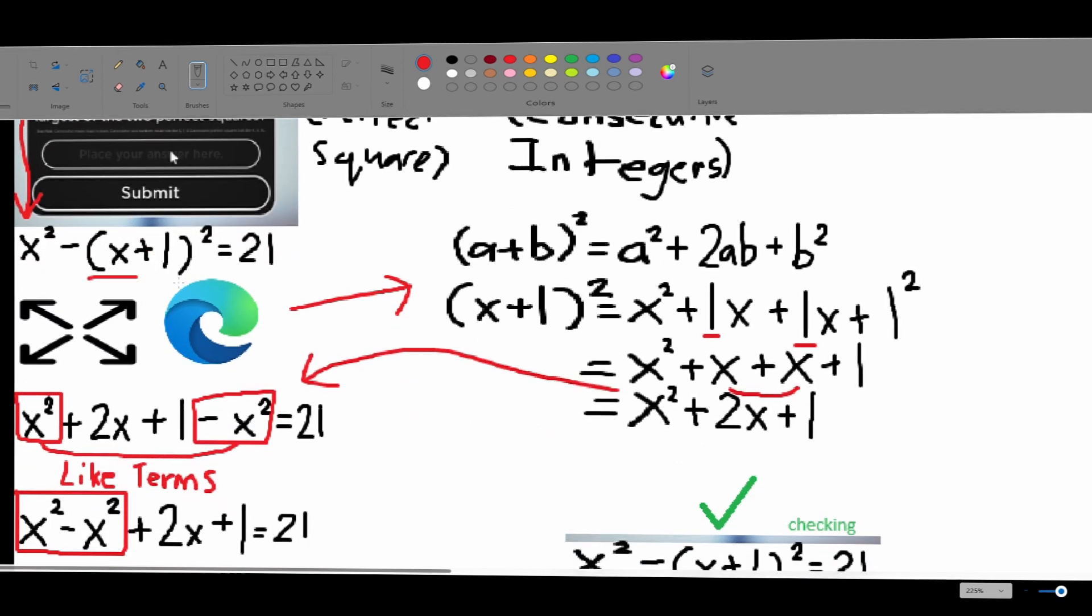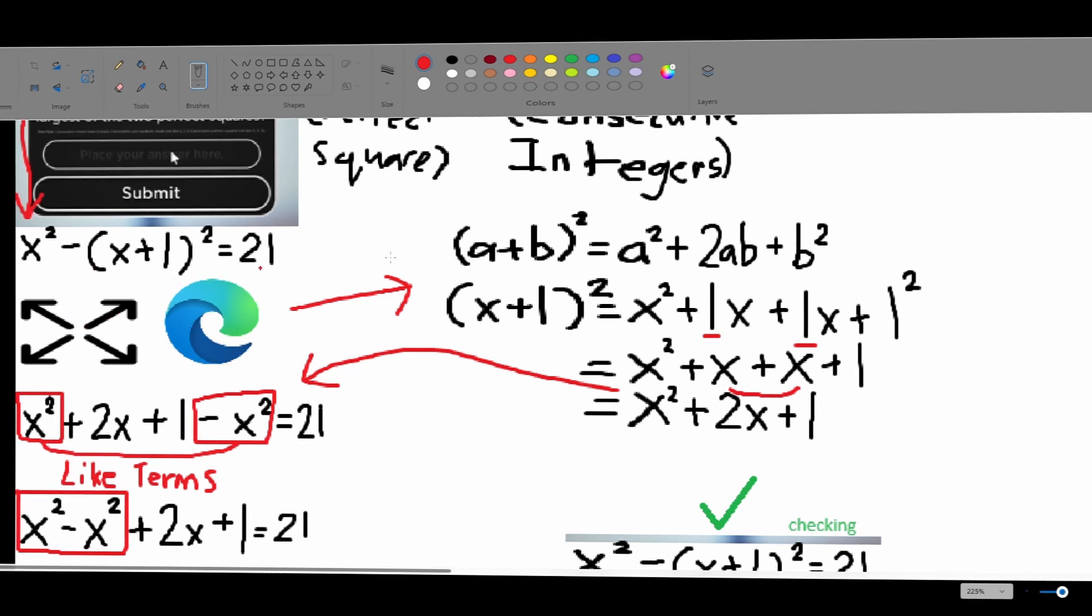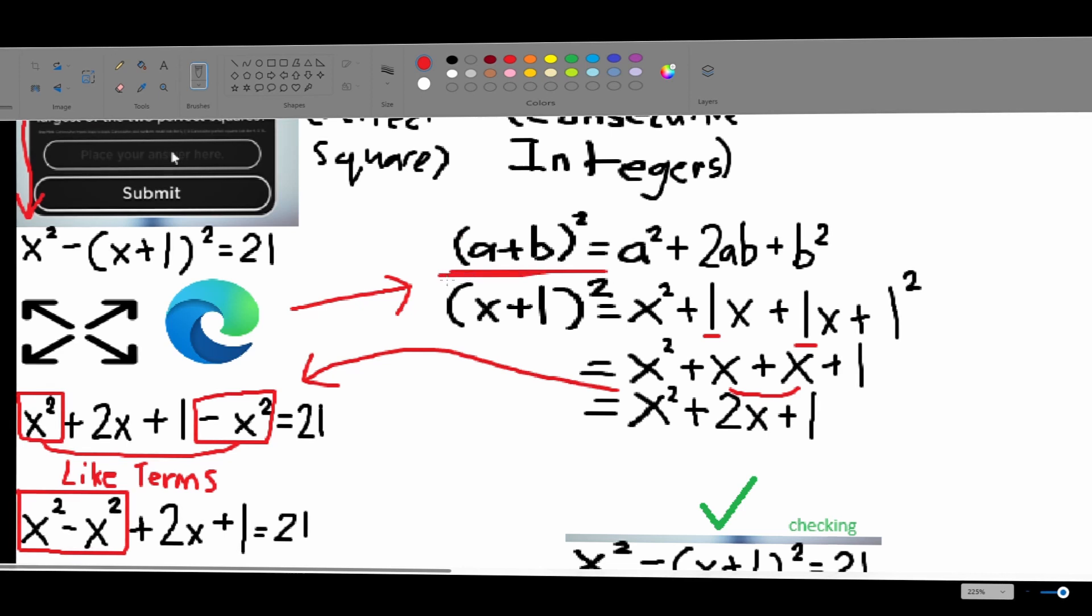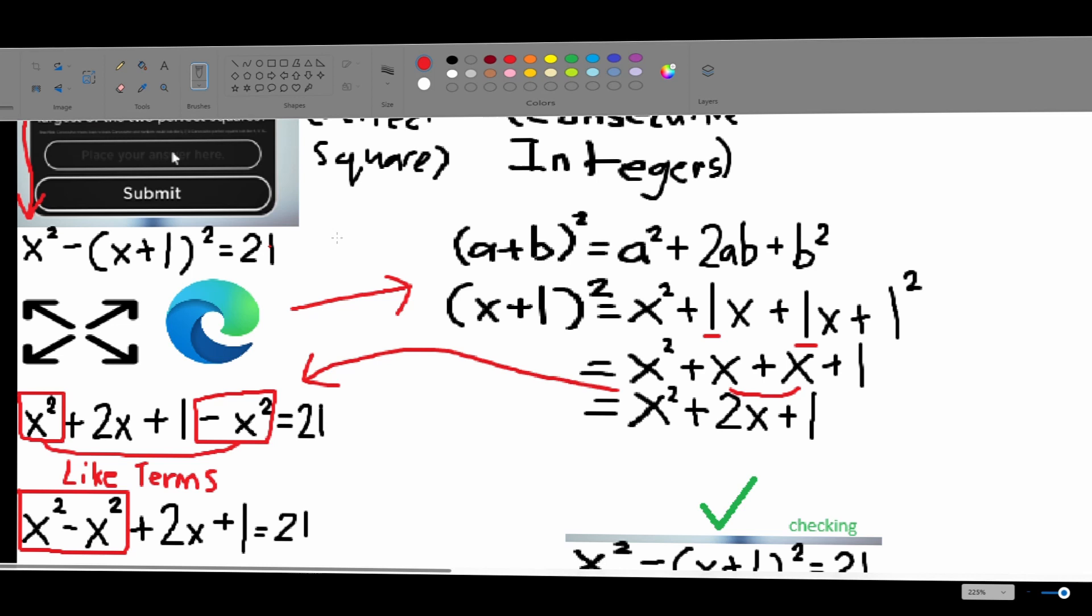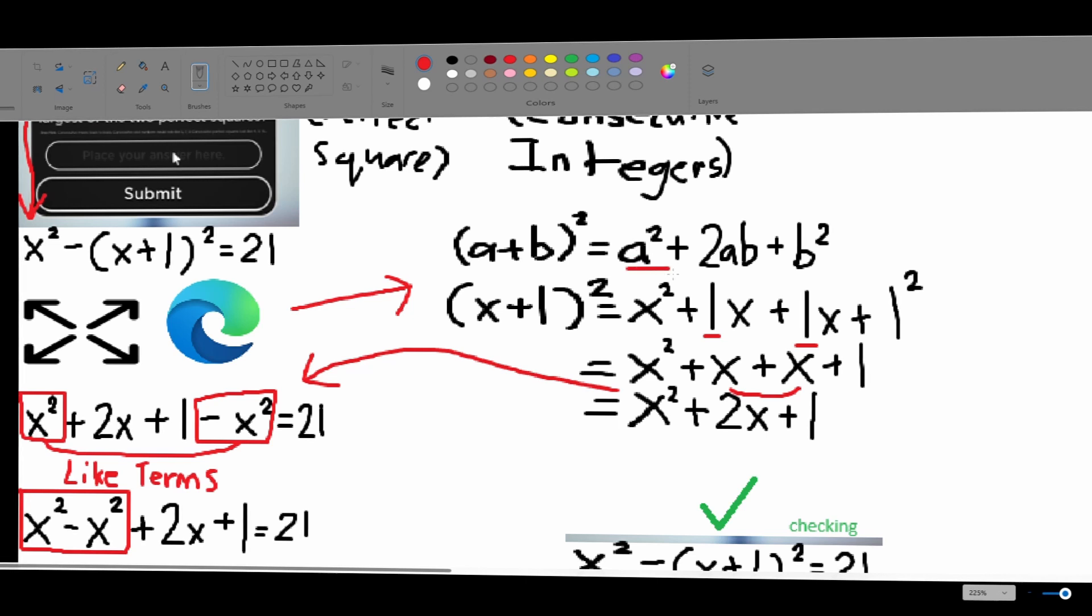So first, we're going to expand and simplify this binomial. So, this is our equation to square a binomial. We're going to square x plus 1 using this equation, which is the square of a plus b equals a squared plus 2ab plus b squared.